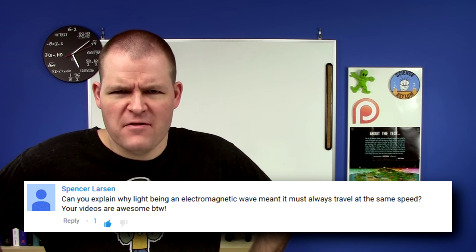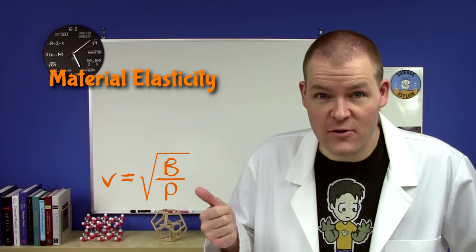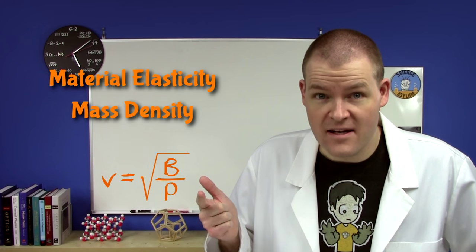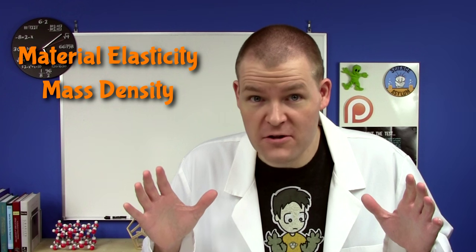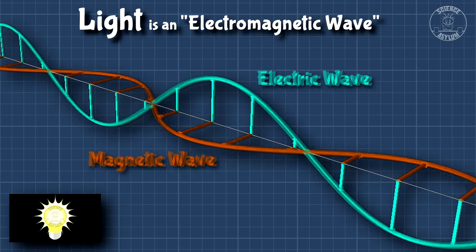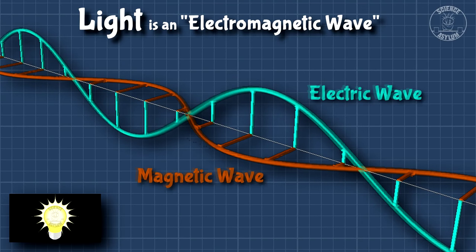Why does light always have to travel the same speed? The speed of any wave is only dependent on the properties of the stuff that's waving. For something like water waves or sound, that could be things like material elasticity and mass density, both of which ultimately depend on things like temperature — very easy to change. Light is a wave in electric and magnetic fields. In other words, not matter. There's no way to change the properties of those fields, so there's no way to change the speed of light. No exceptions!